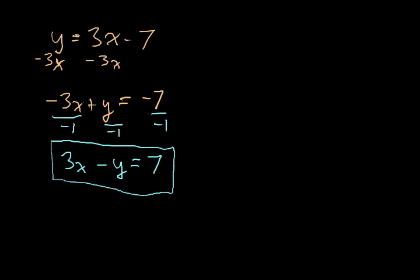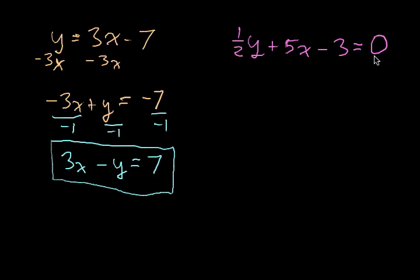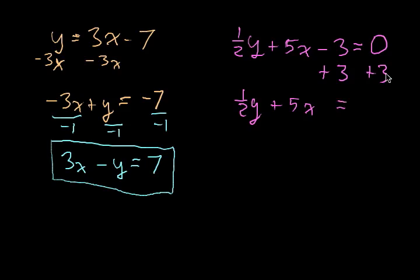Let's try another example: one half y plus 5x minus 3 equals 0. This is going to need some work. The order should be the x term, the y term, the equal sign, and the constant. The constant is in the wrong spot, so we add 3 to both sides, leaving us with one half y plus 5x equals 3. The x and y terms are in the wrong order, so we switch them: 5x plus one half y equals 3.